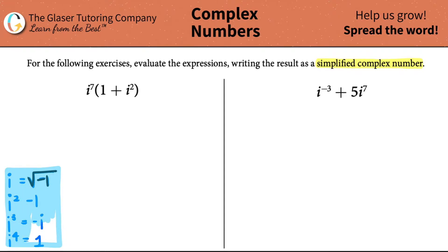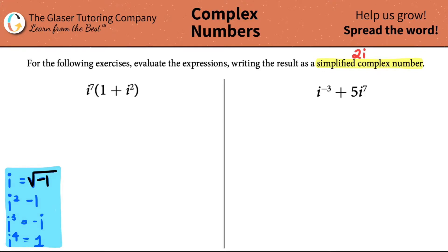This is non-negotiable — you need to know your i through i to the fourth. Now let's get started. Let's do the math and write the result as a simplified complex number. A simplified complex number means you're only allowed one i in your answer. You cannot have i squared, i to the third, or i to the fourth. You need to simplify everything down to just a single i value.